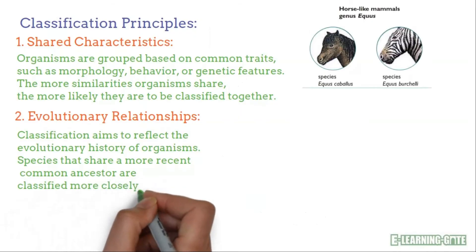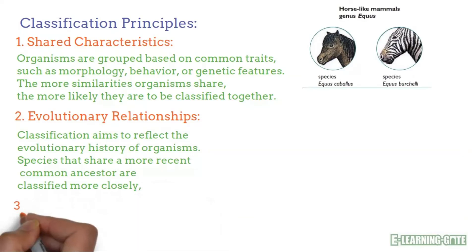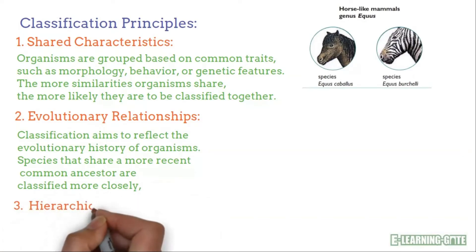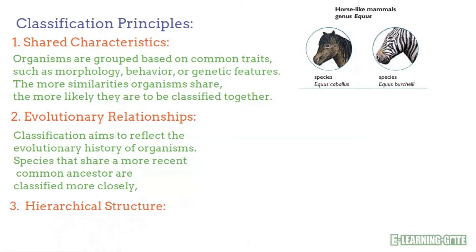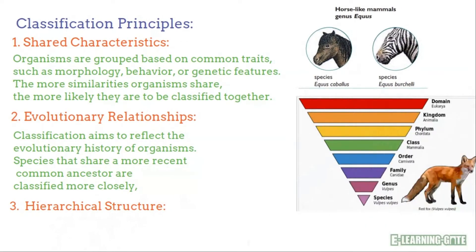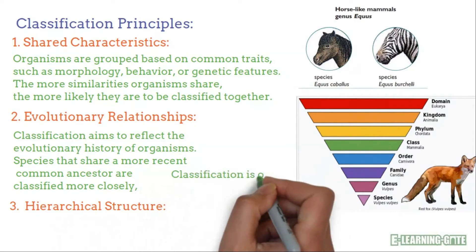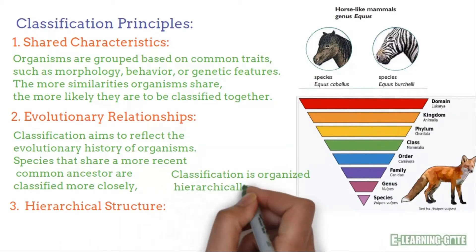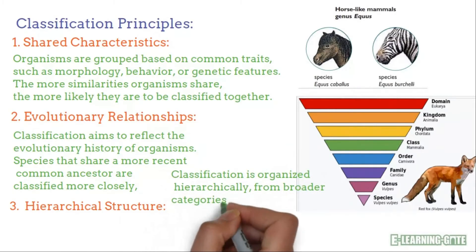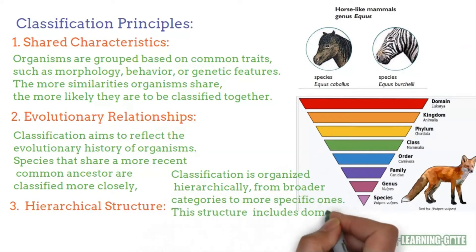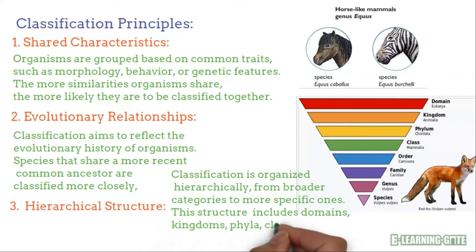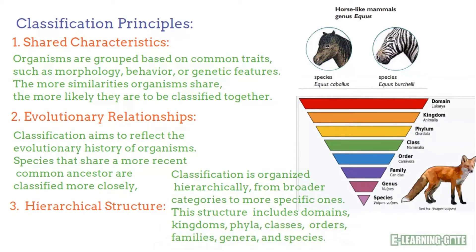The third tool is hierarchical classification. Hierarchical classification tools are the systematic methods used to organize and categorize living organisms into hierarchical groups based on their shared characteristics and evolutionary relationships. Understanding how organisms are related involves exploring both their evolutionary relationships and the tools we use to classify them hierarchically.